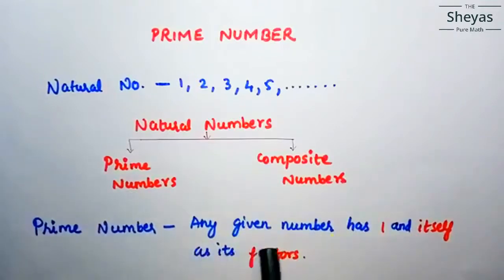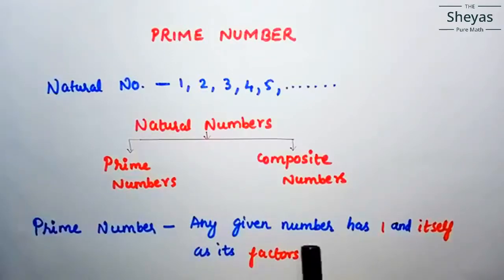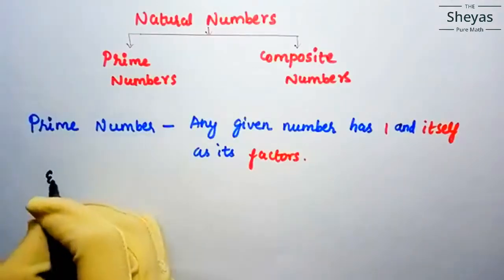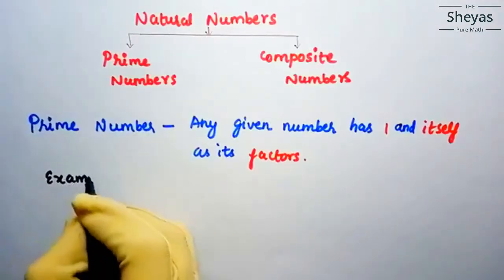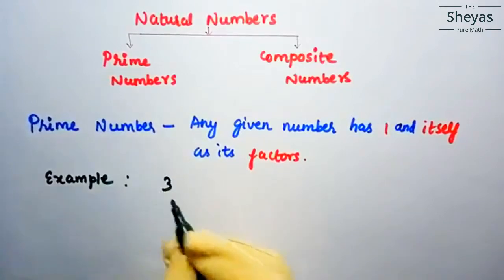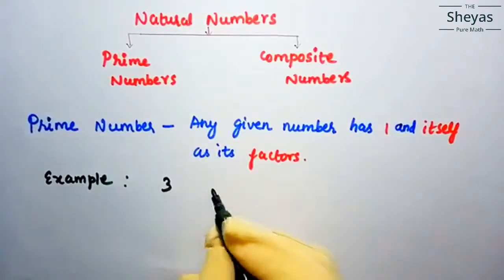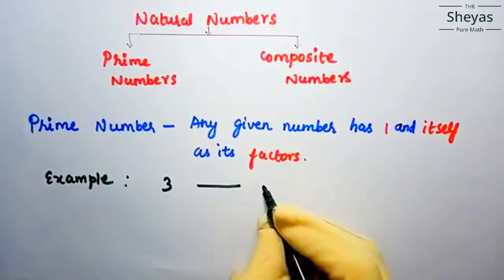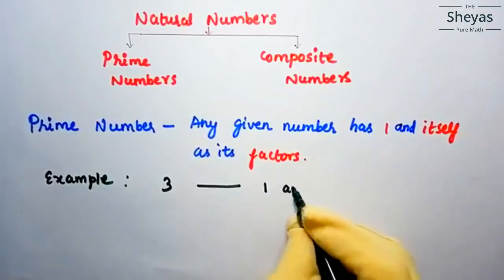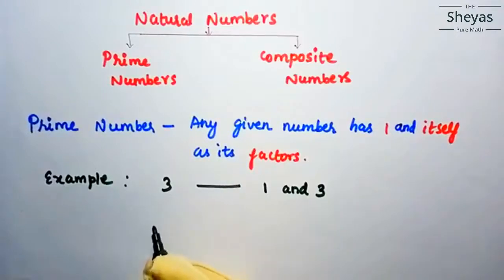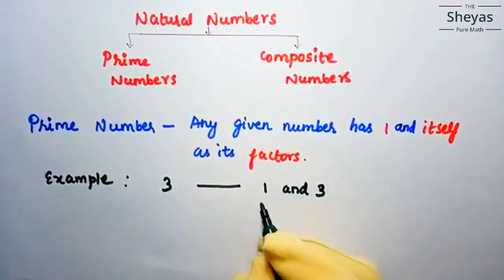Prime number: any given number that has 1 and itself as its only factors. Let us see some examples. Let me take 3. The factors of 3 are 1 and 3 — it has no other factor. So this is a prime number, that is 1 and itself.